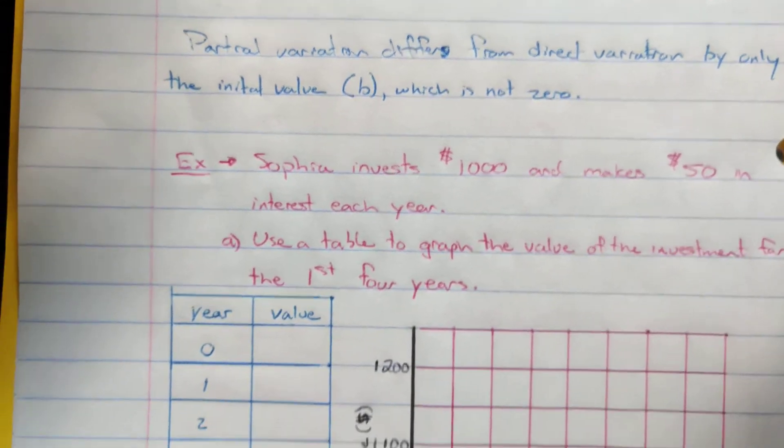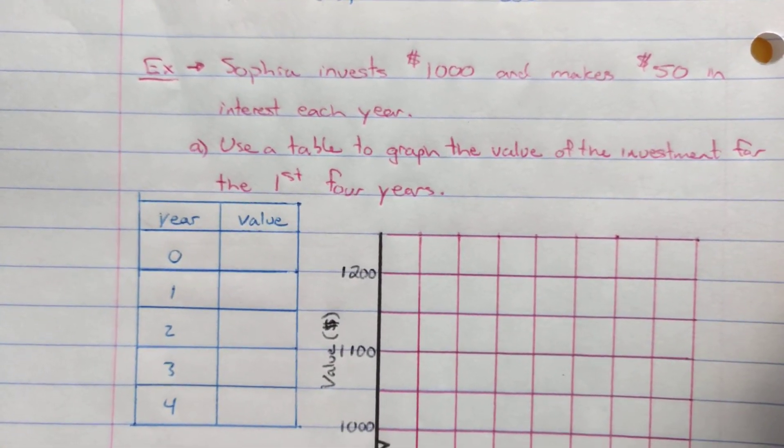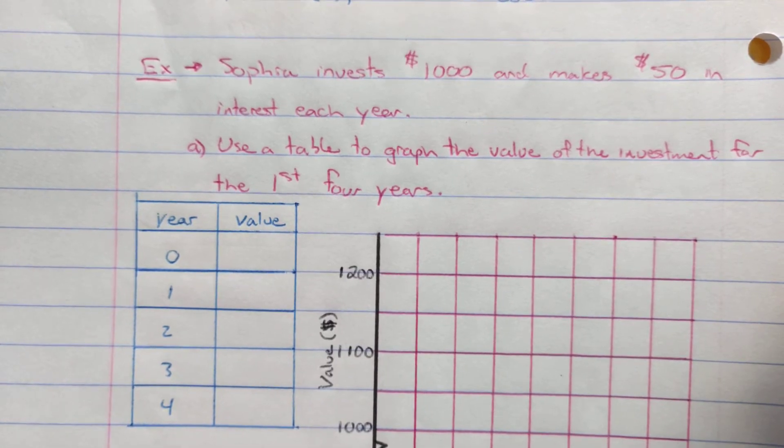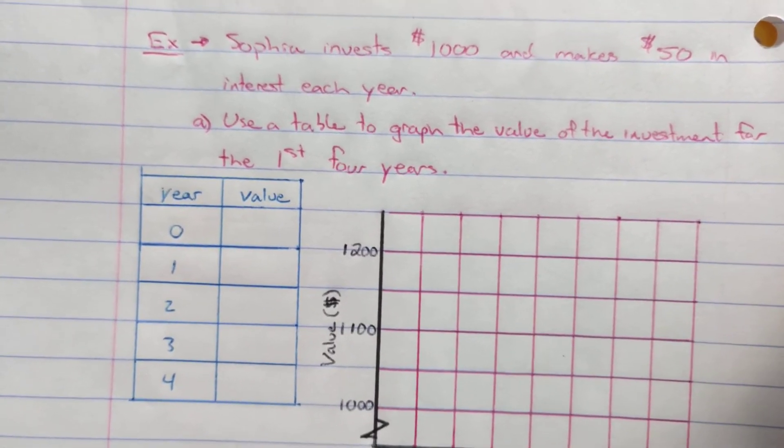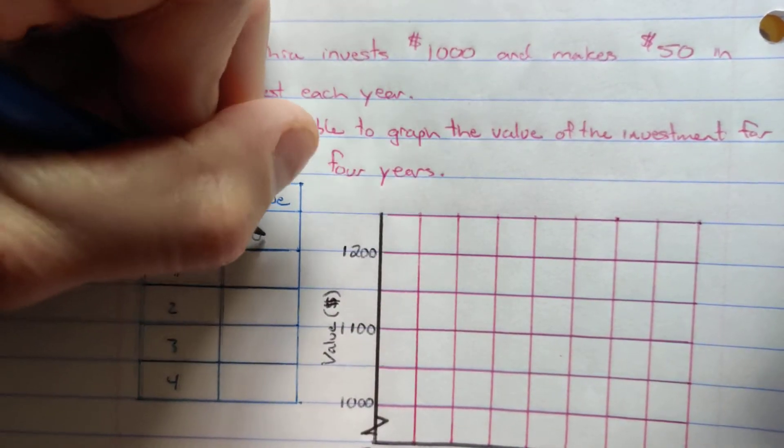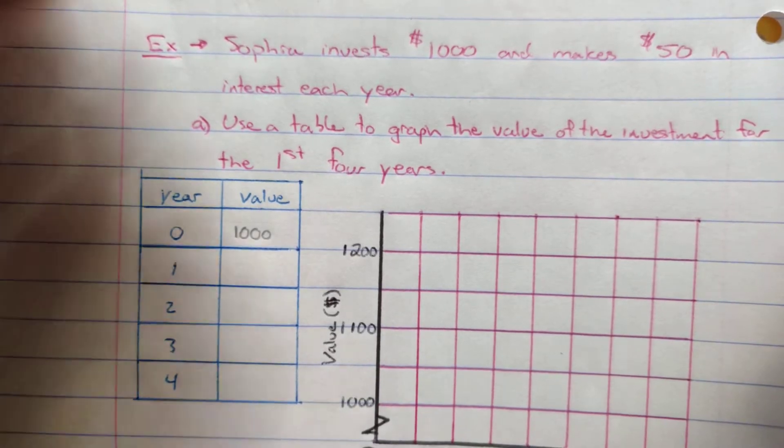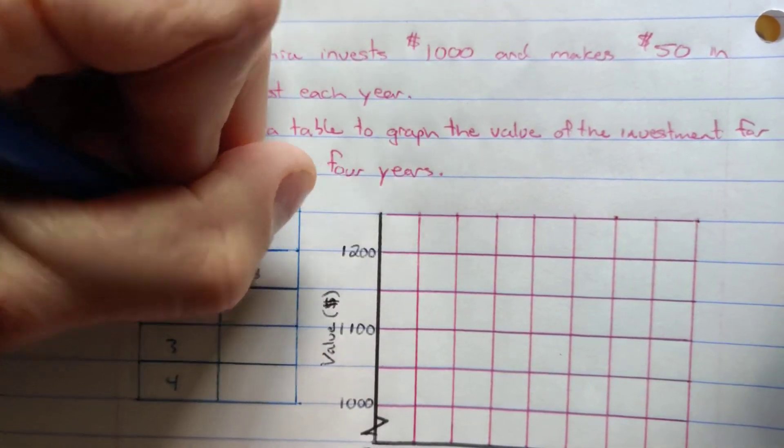So here's an example. We've got Sophia investing $1,000 and making $50 in interest each year. We're going to use a table of values to graph the investment over the first four years. So year zero, she's got $1,000 in there. After one year, she's made $50 in interest, so $1,050.